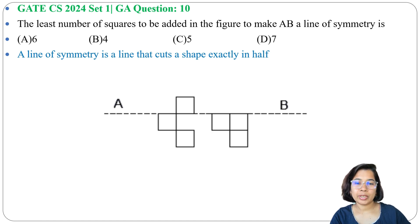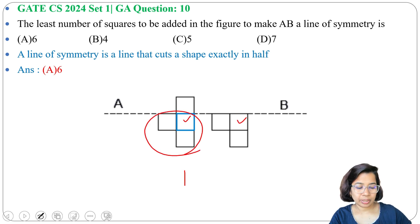For making it half, we need to do the same structure below the line and above the line. So now to match both structures, first we need to add a box here. Then to match this below side, we need to do the same on the top side.